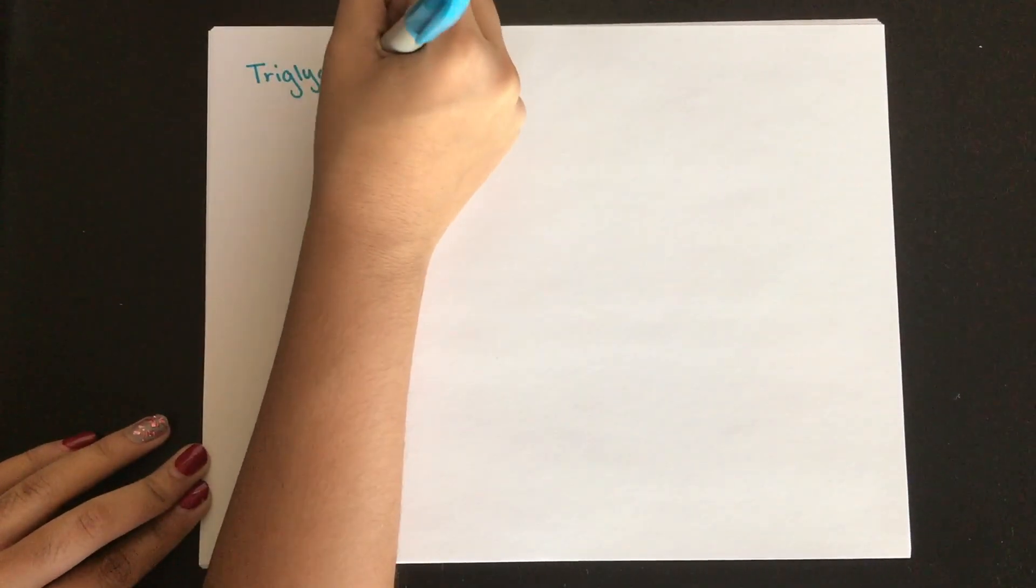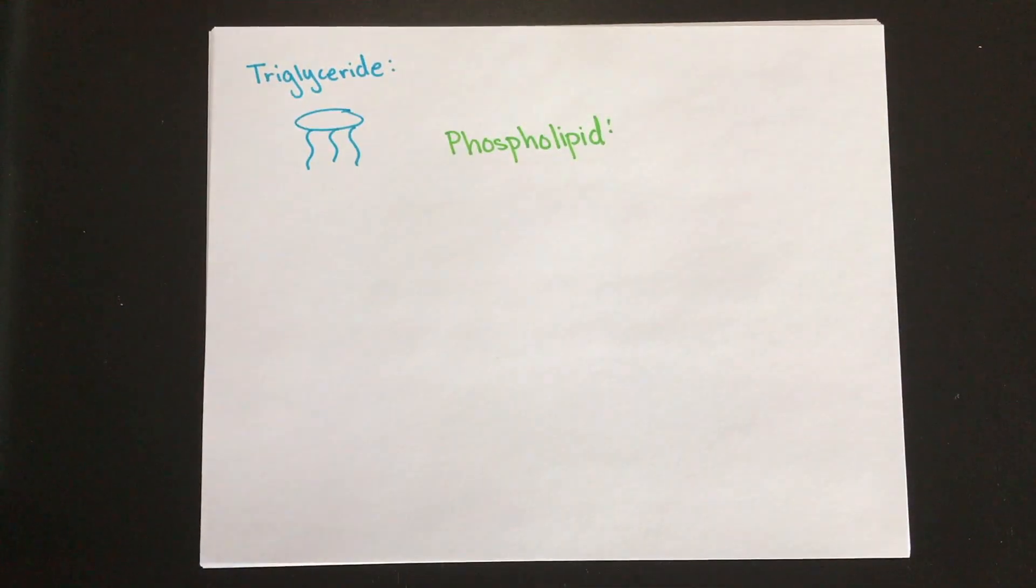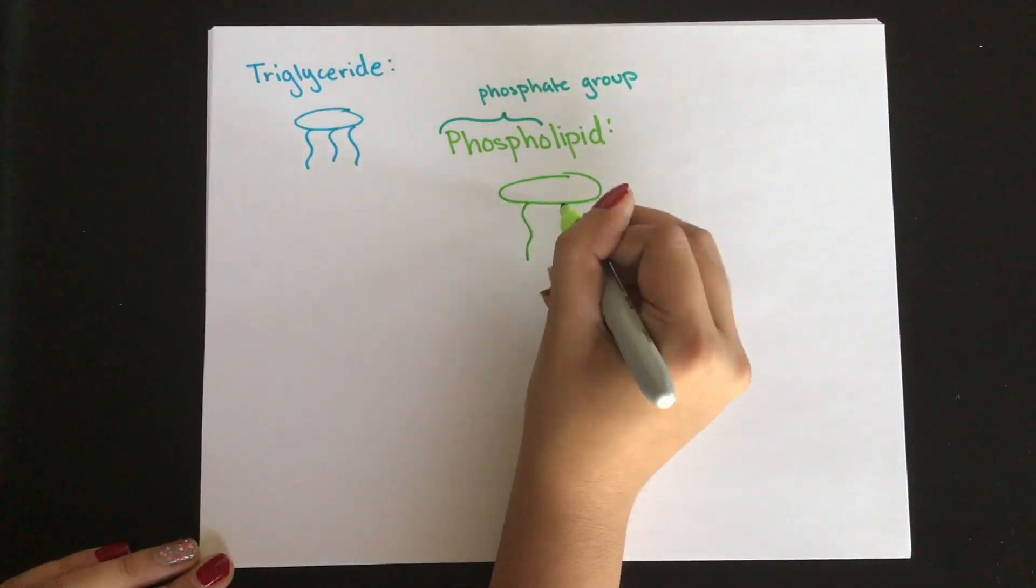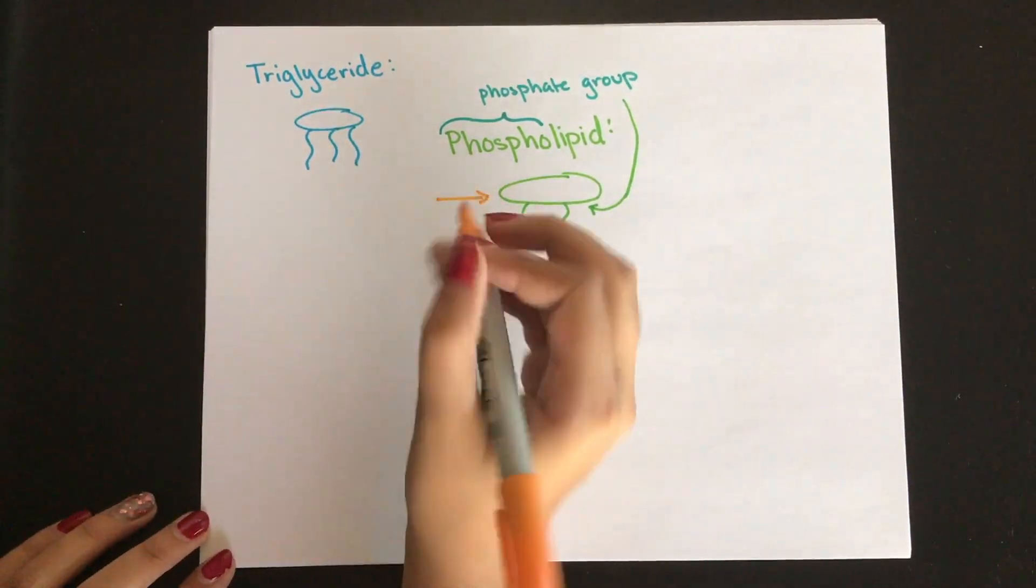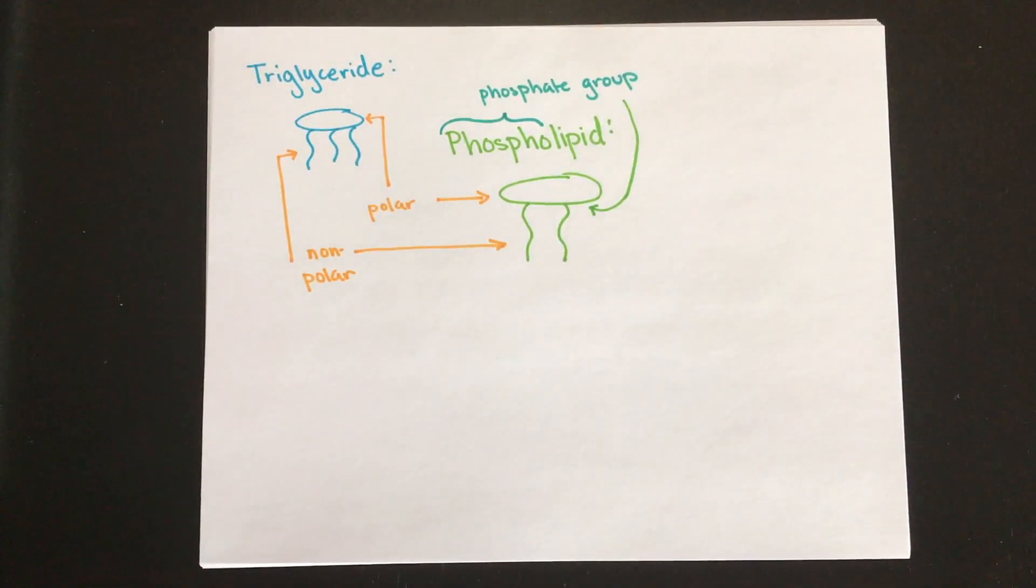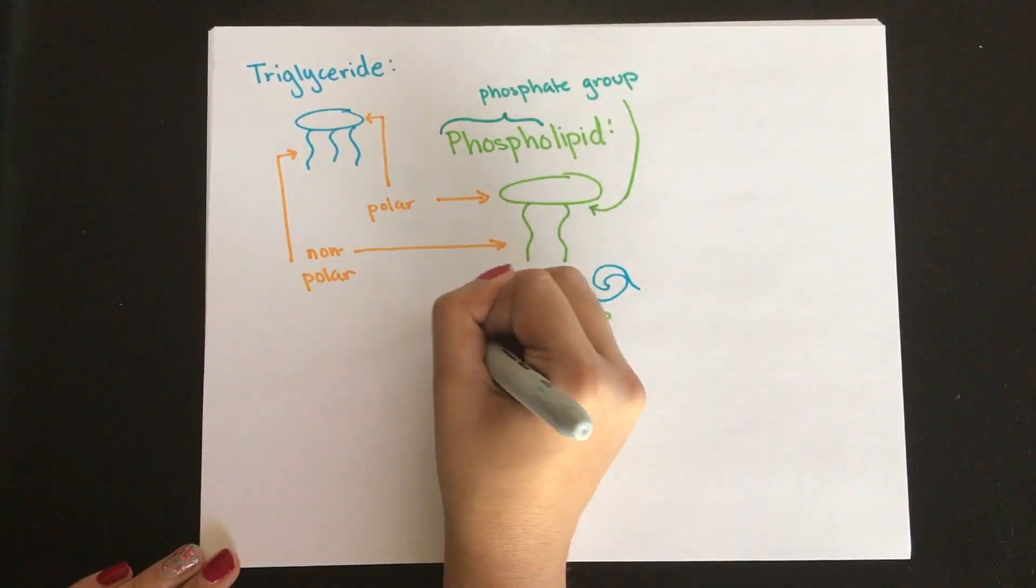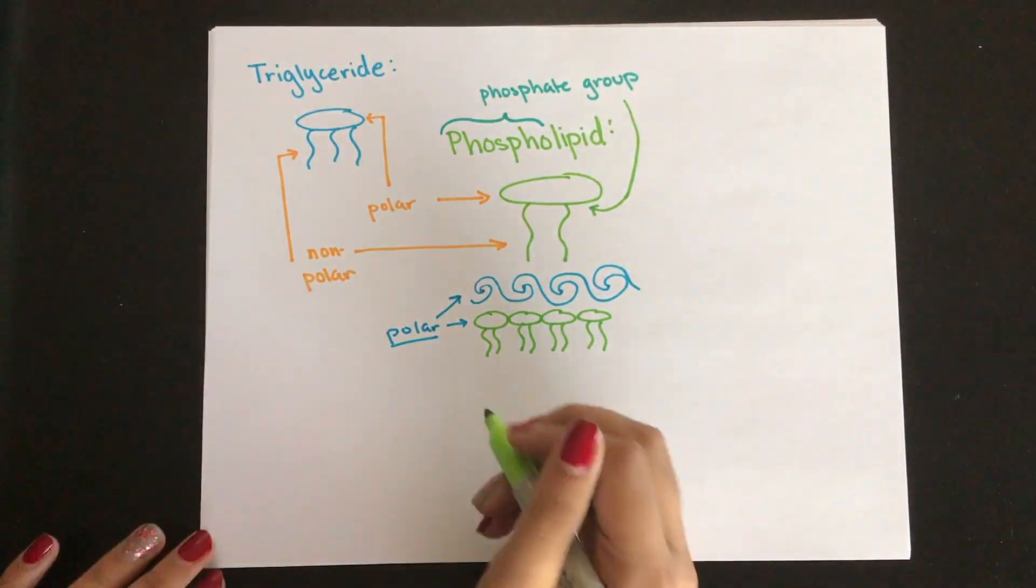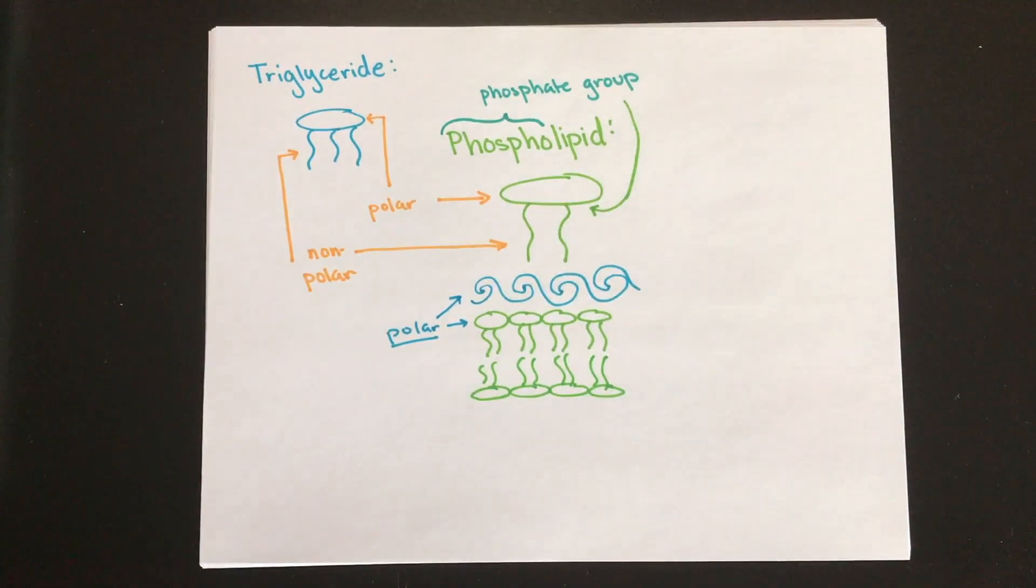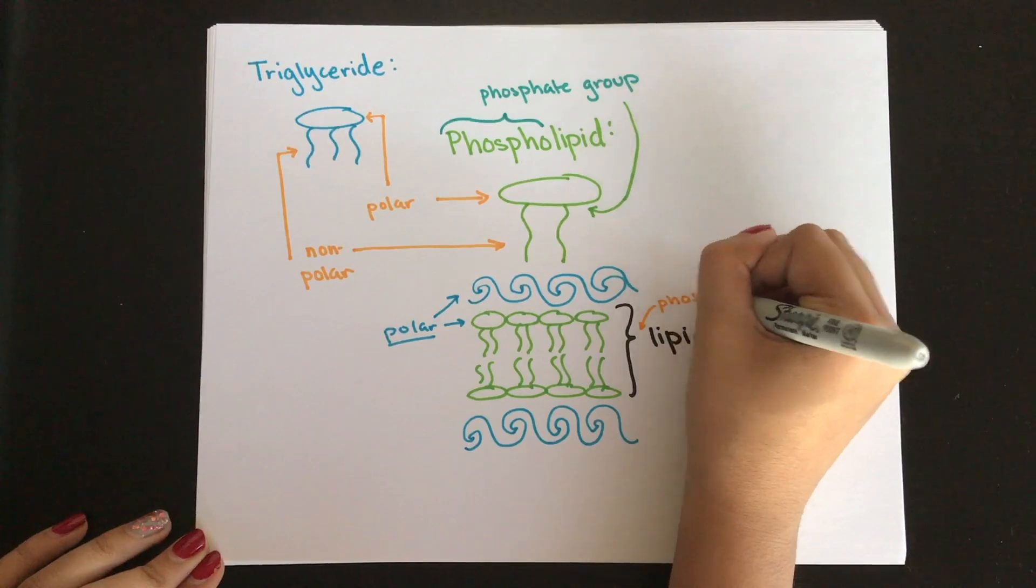Next is your phospholipids. Structurally, these are almost identical to your triglycerides, except one of the fatty acids is changed to a phosphate group. The phosphate group is hydrophilic or polar, making phospholipids polar on one end and nonpolar on the other end. So polar on the head and nonpolar at the tail. When the phospholipids interact with each other, the phosphate heads stay together and often form a double layer. And this is what makes up your cell membrane or your phospholipid bilayer.